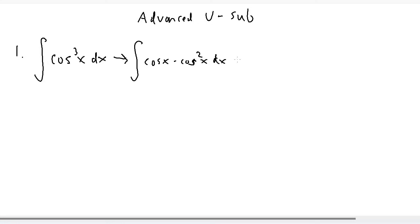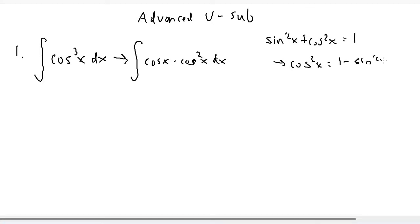Recall that using trig identities, sine squared x plus cosine squared x equals 1. So we can say that cosine squared x is equal to 1 minus sine squared x. We can substitute that in for cosine squared x, so we get the integral of cosine x times 1 minus sine squared x dx.